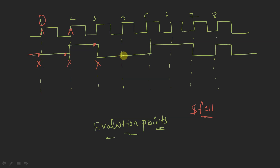At the fourth clock edge, the value of x at the current evaluation point is 0 (sampled just before the clock edge), and at the previous evaluation point the value was 1. So there is a transition from high to low — from positive level to negative level. That is why the assertion passes here. At the fifth clock cycle, the current evaluation point value is 0 and the previous evaluation point value is also 0.